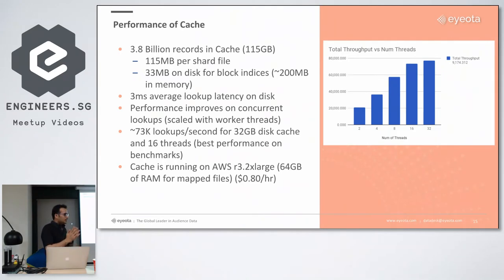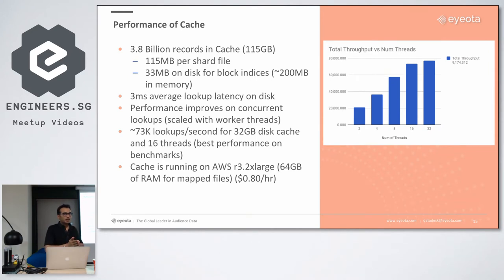Currently in production, this runs on an R32X large machine — sorry, 64 GB RAM — but we've dedicated only 1.5 GB of heap to the process. Linux effectively leverages all the rest of the RAM.